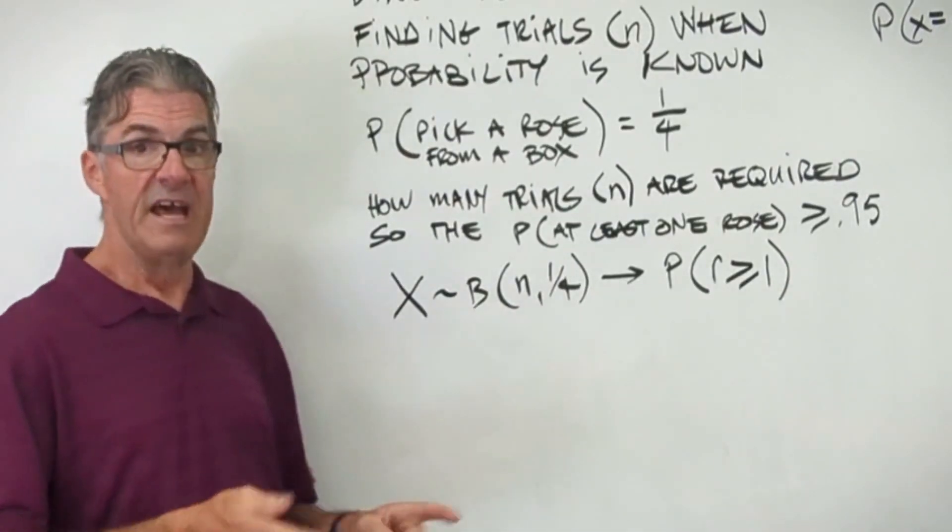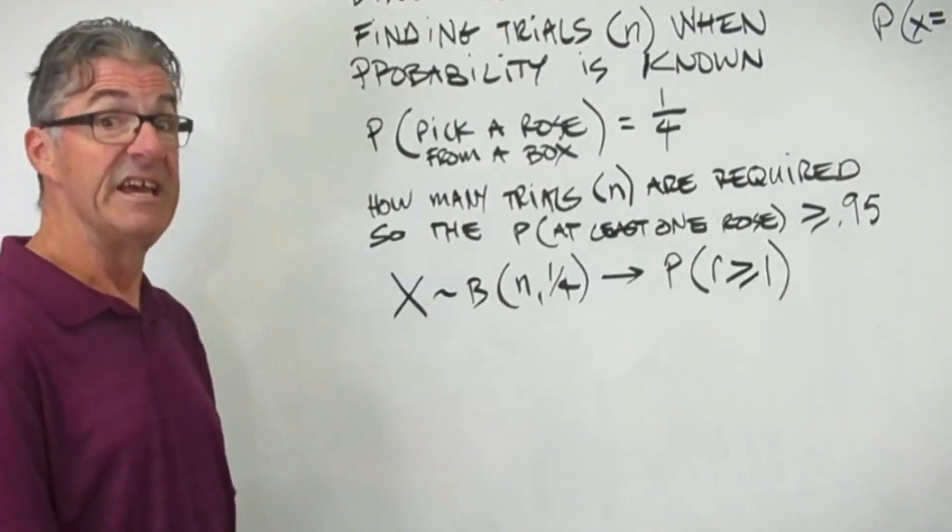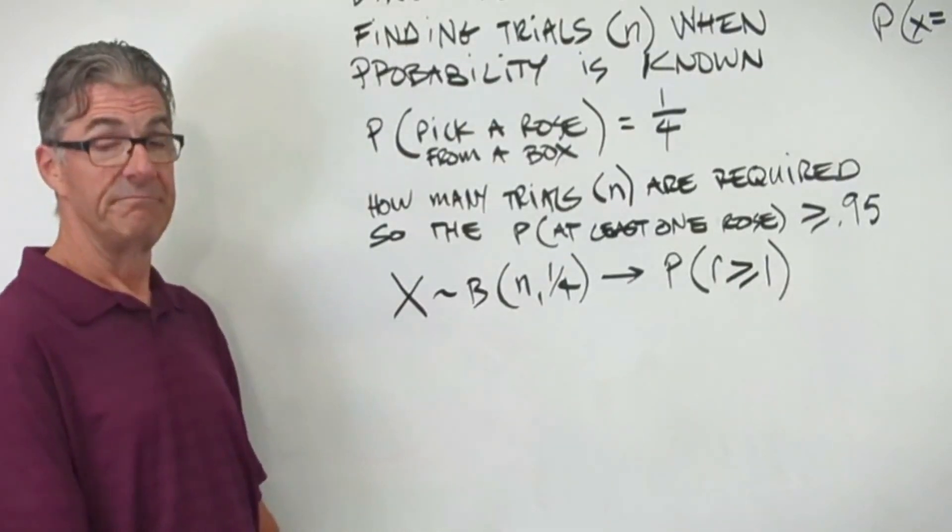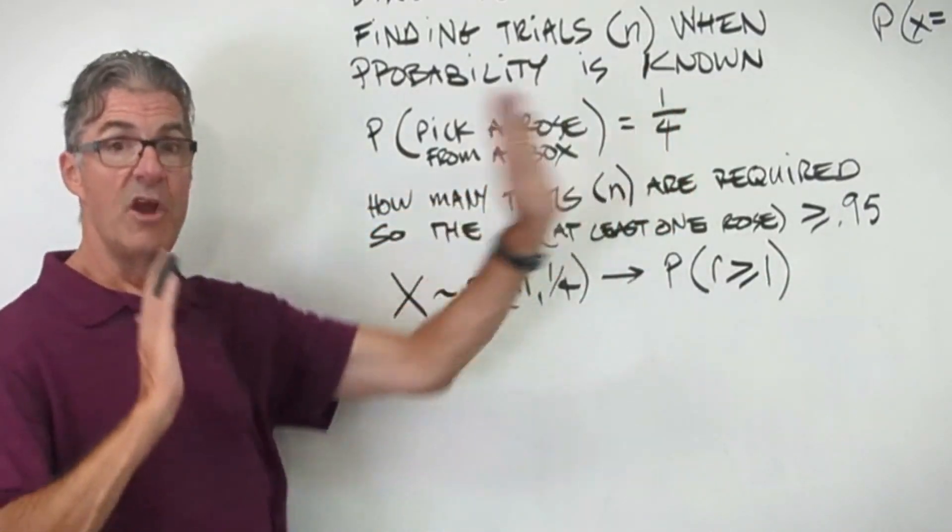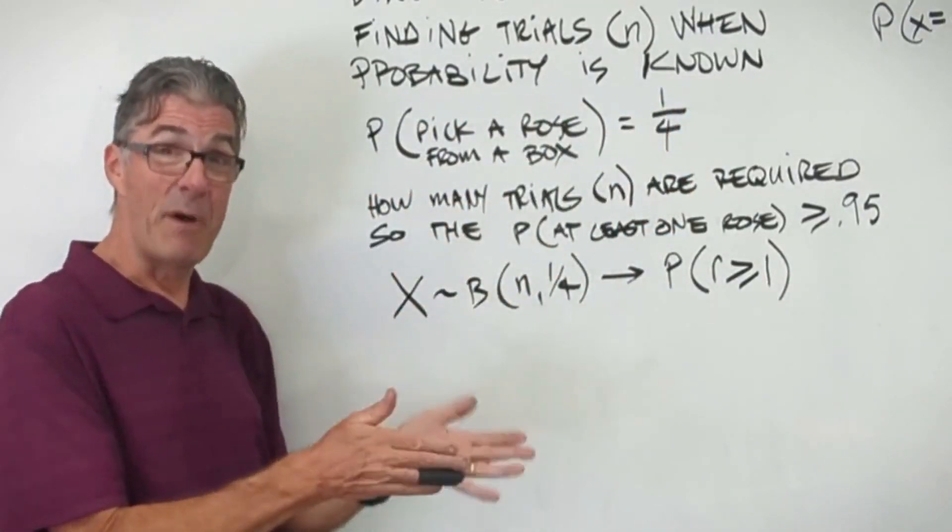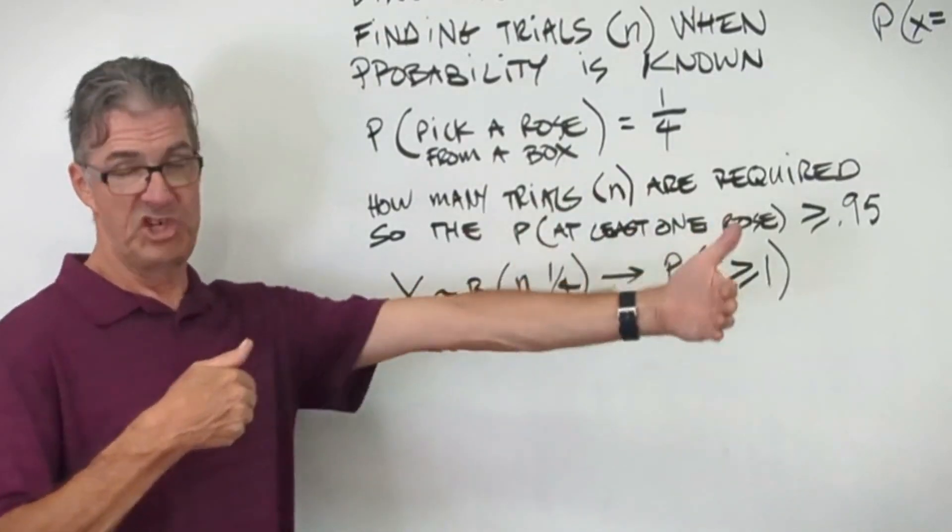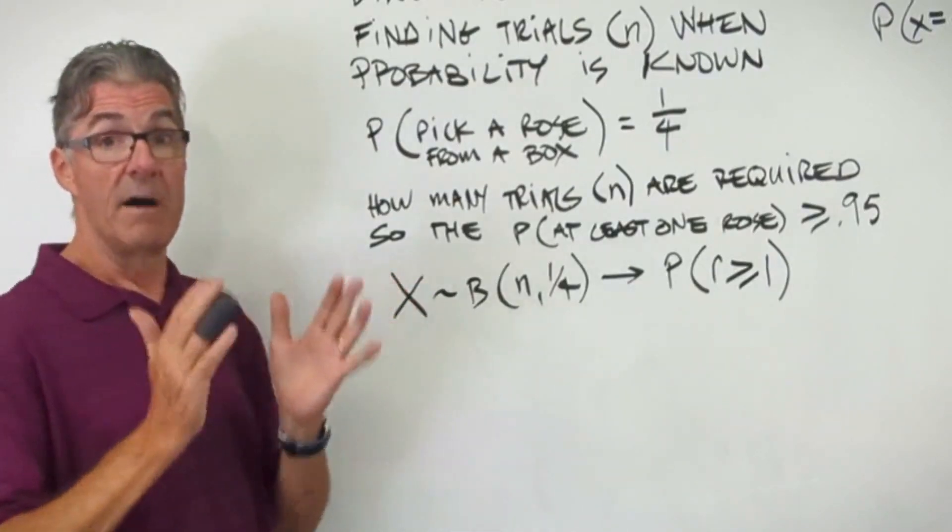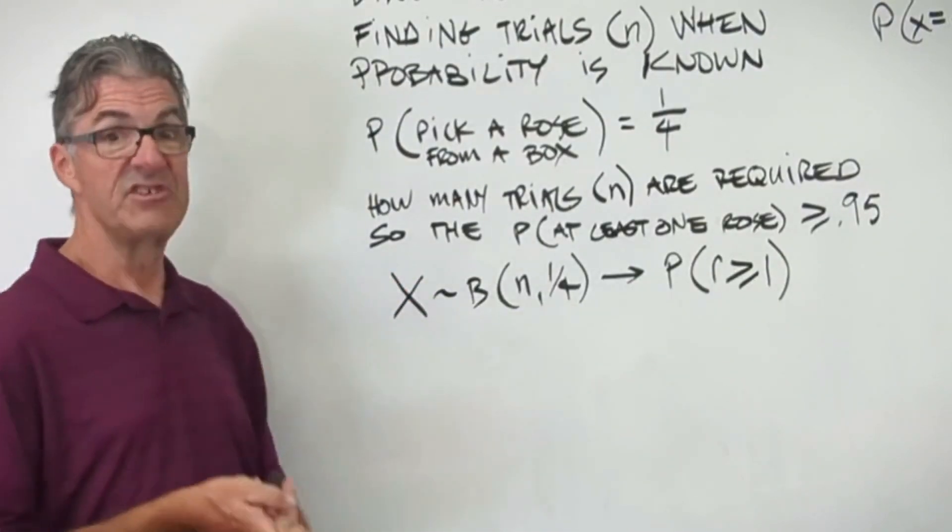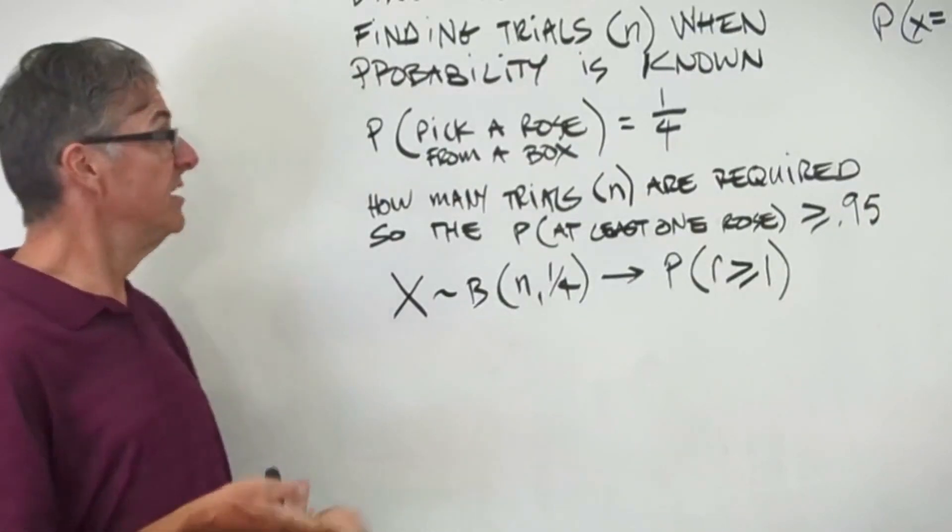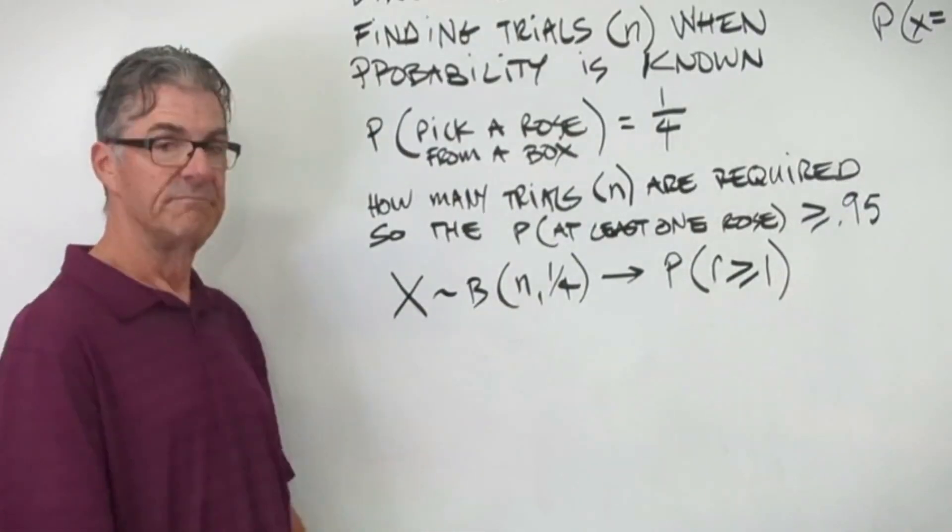Before we move on, there is an assumption that's not mentioned in this problem. Pause the video and see if you can figure that out. There has to be replacement. Otherwise, we need to know how many flowers are in the box and the probabilities would change. Remember all your assumptions about binomial distributions and probability. One of them is that the events are all independent. So it's always going to be a quarter probability that you pull a rose out of the box.